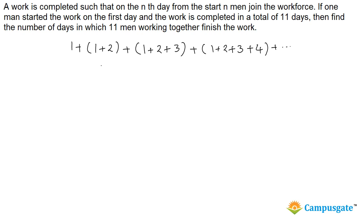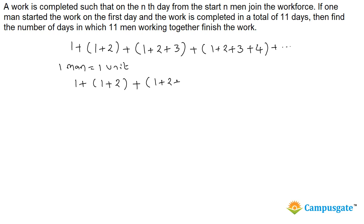Let's assume one man's capacity equals one unit. On the first day, one unit of work is done. On the second day, two people join so we have three people total — three units of work done. On the third day, there are six people, so six units done. On the fourth day, we have ten people, so ten units will be done.